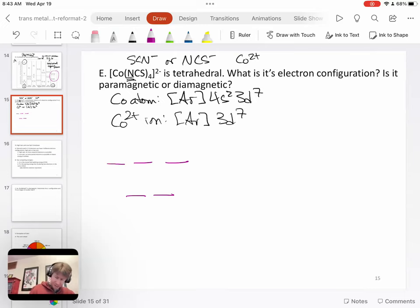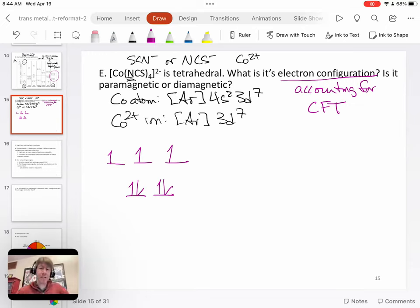And we have seven electrons to put into them. And so let's go ahead and do that. We have one, two, three, four, five, six, seven. That is the electron configuration. But on your exam, it will say, what is its electronic configuration accounting for crystal field theory? And the homework will have some that are pre-crystal field theory to just make sure we know how to do electron configuration. And then it will have you actually putting the electrons into the crystal field theory orbital splitting pattern like this here.